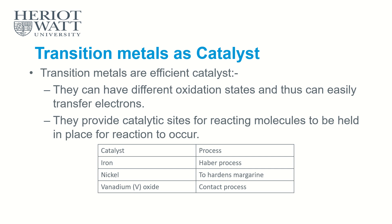This is the last part, which is transition metal can act as a catalyst. Now, we learned that in SAM1, homogeneous catalyst and heterogeneous catalyst. Now, catalysts usually are transition metals. Why transition metals suitable as a catalyst? Because, number one, they can have different oxidation states and thus can easily transfer electrons. This is usually meant for homogeneous catalysts. The next one, they provide catalytic sites for reactive molecules to be held in place for the reaction to occur. This is actually referring to heterogeneous catalysts.